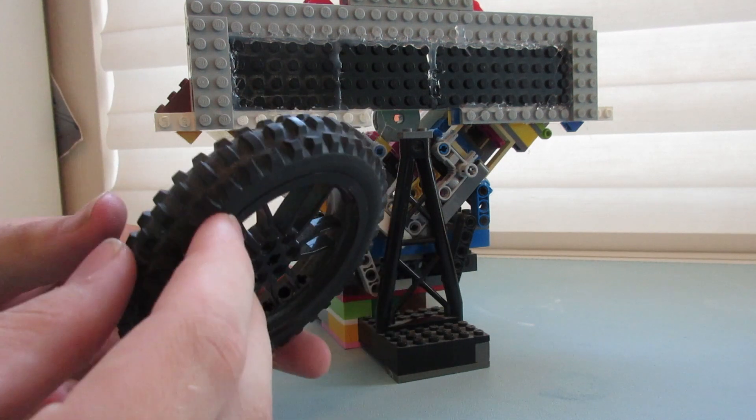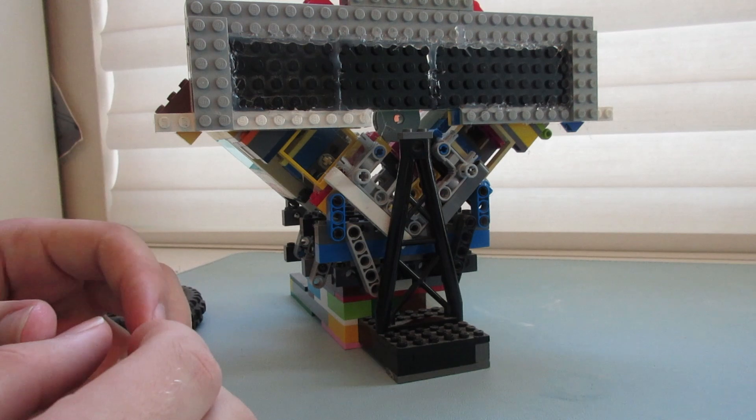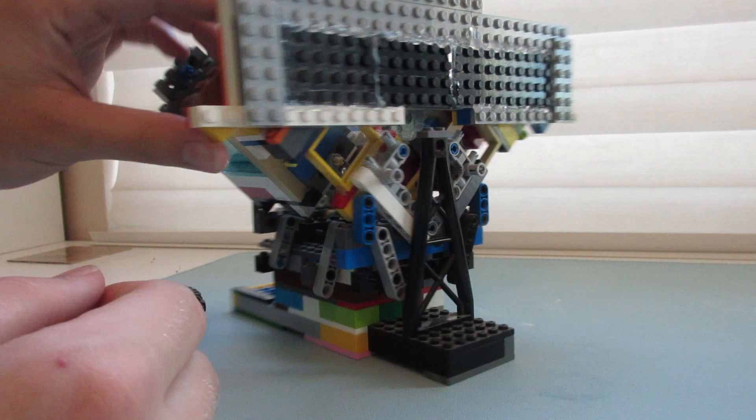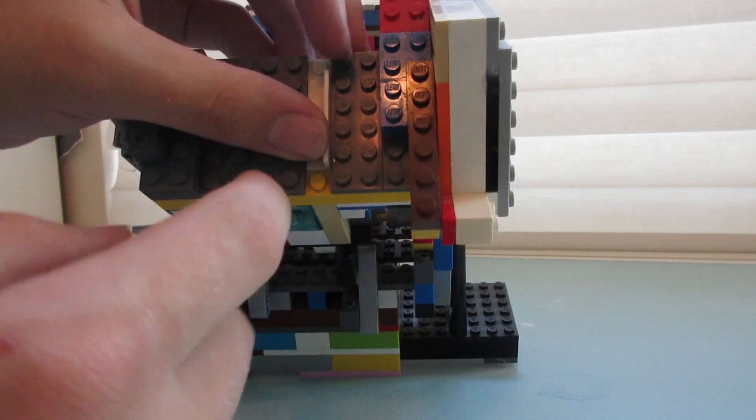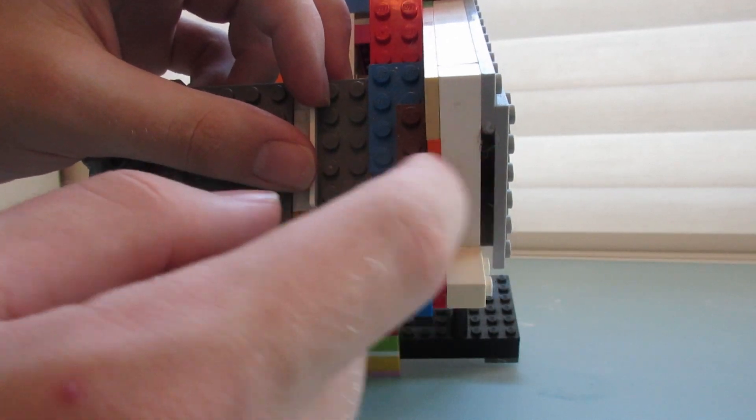So I took the slightly smaller wheels that you'd find on a Lego car, not the super super tiny ones, but like slightly bigger. And what I did is I put them in between this gap and this here, kind of acting as like a seal.